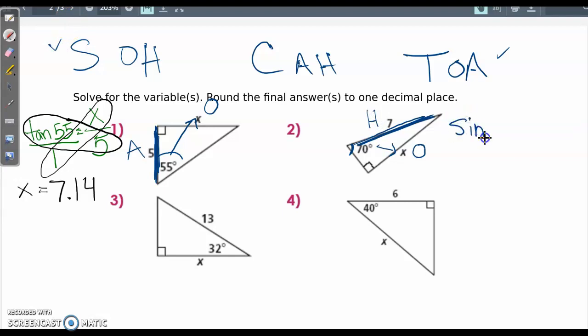So sine of the angle 70 is going to equal opposite divided by hypotenuse. Making a proportion with the other side making a fraction, I'm going to cross multiply x times 1 and then sine 70 times 7. x times 1 is x and then sine 70 times 7 is about 6.578. I like rounding to three decimal places.